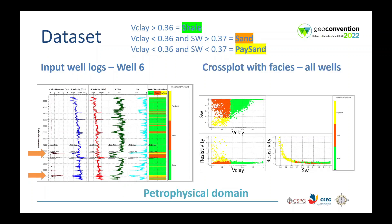Here we have the previous cross plot with information from all wells, but now it is colored by facies and shows a good definition in the petrophysical domain. For example, the paste sand is clearly defined.